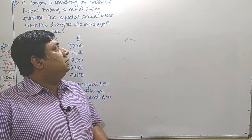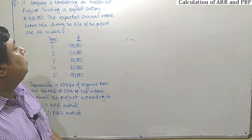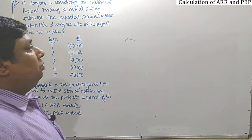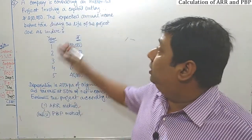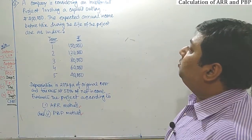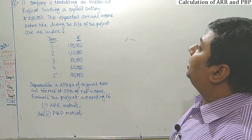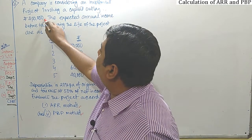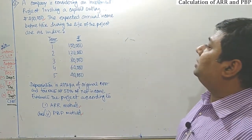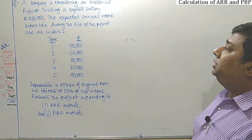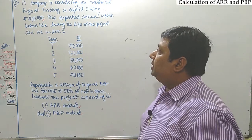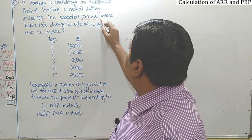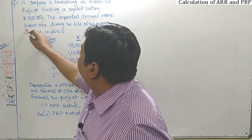Welcome. We are going to solve another question of capital budgeting. What is mentioned in the given question? A company is considering an investment project involving a capital outlay of 2 lakhs — that is the capital outlay, that is our investment. The expected annual income before tax during the life of the project are as follows. This line is very much indicative.